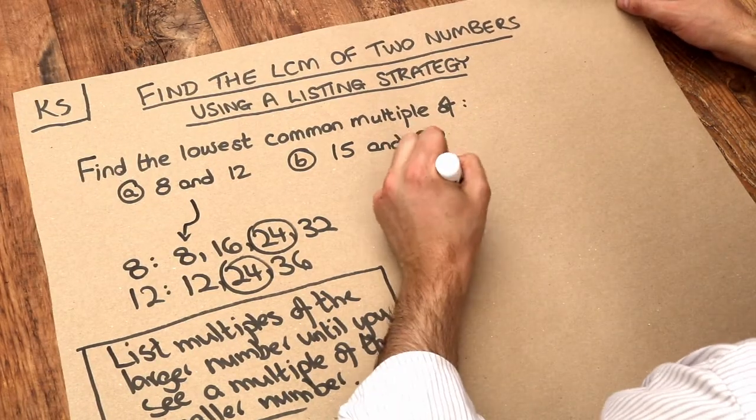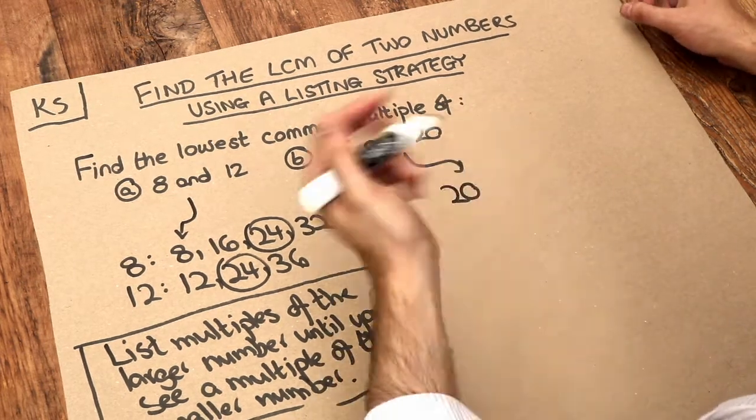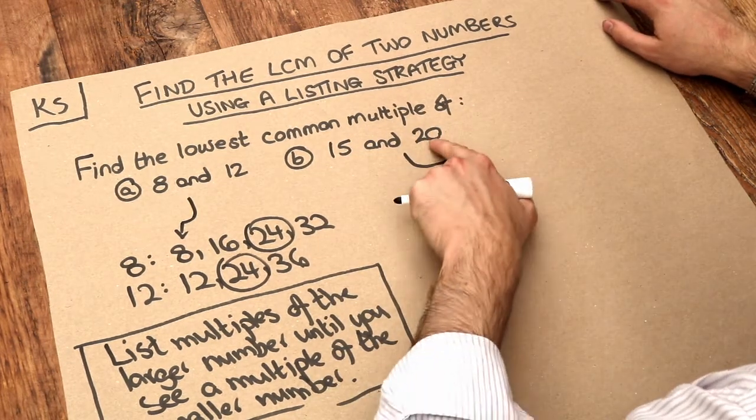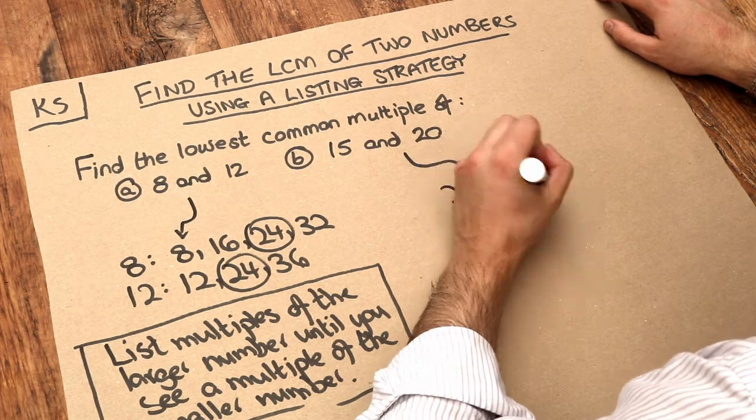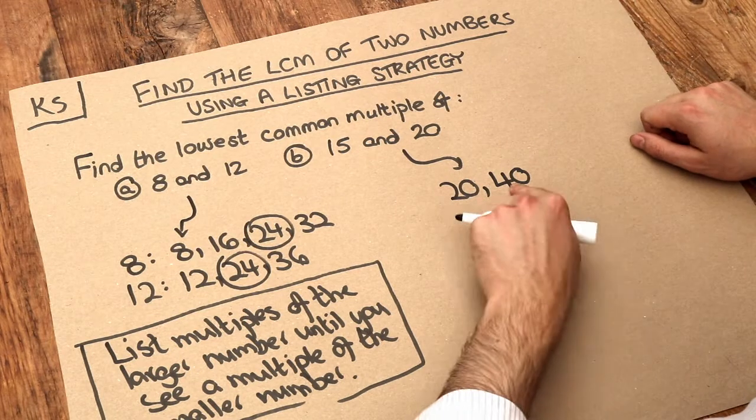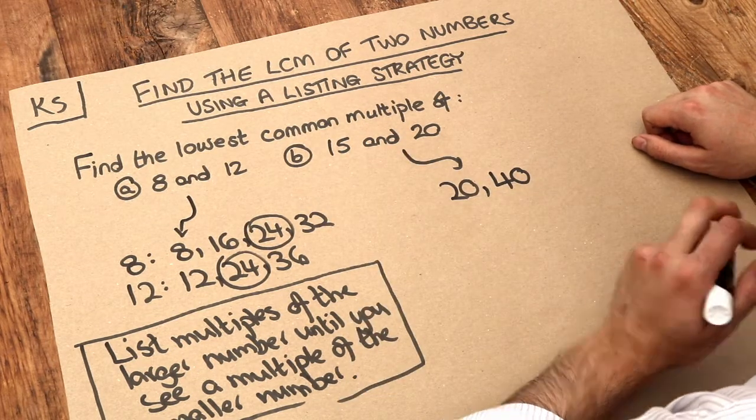So what's one lot of 20? 20. Is that a multiple of 15? No it's not. What's the next multiple of 20? Well 2 times 20 is 40. Is that a multiple of 15? No. 40 is not in the 15 times table. So we have to keep going.